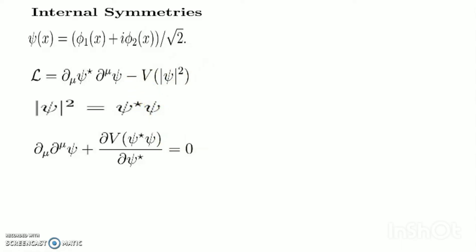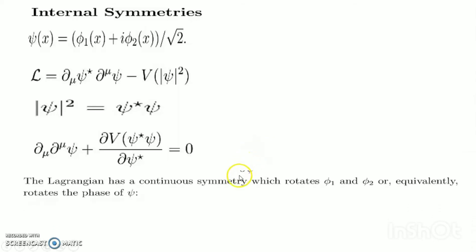The Lagrangian has a continuous symmetry which rotates phi_1 and phi_2, or equivalently rotates the phase of psi: psi tends to e^(i*alpha) * psi, and delta psi equals i*alpha*psi, where the latter equation holds with alpha infinitesimal.